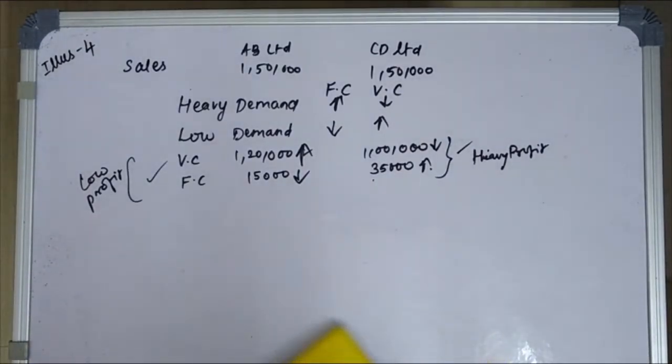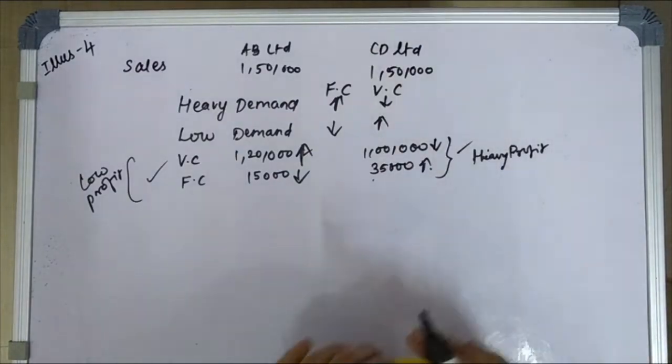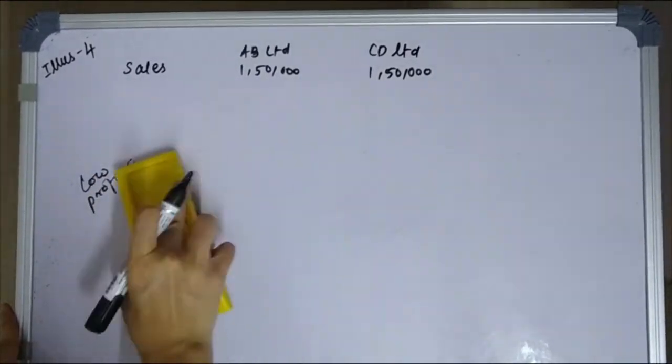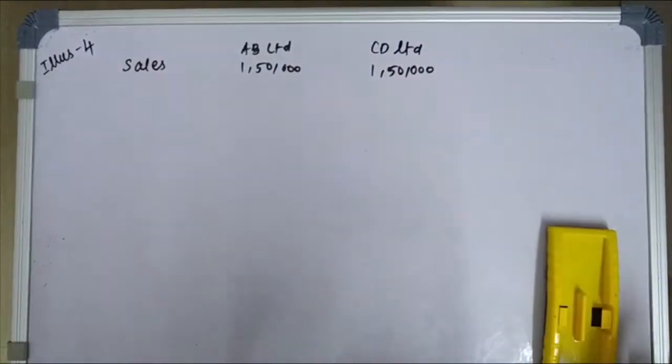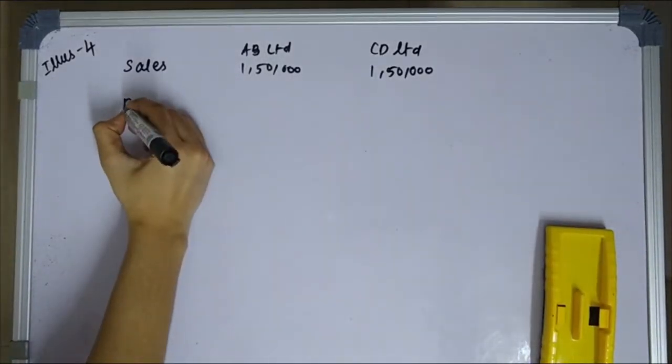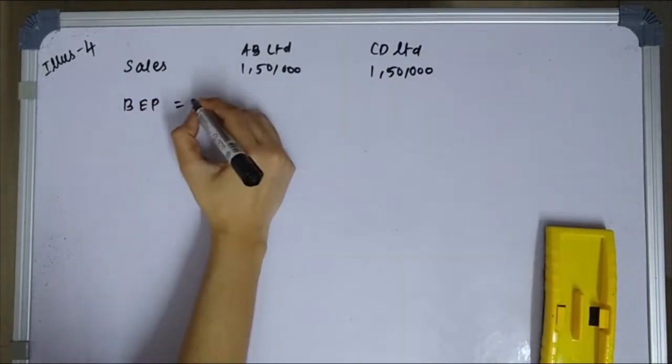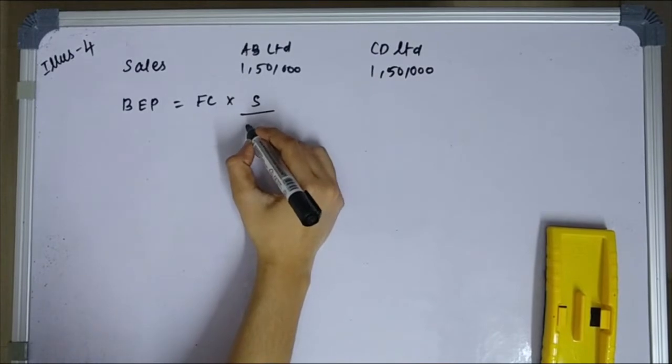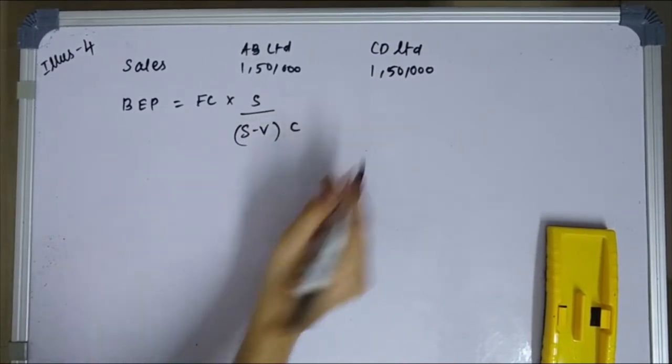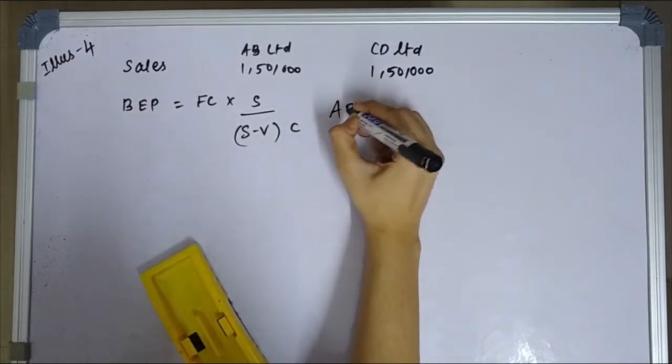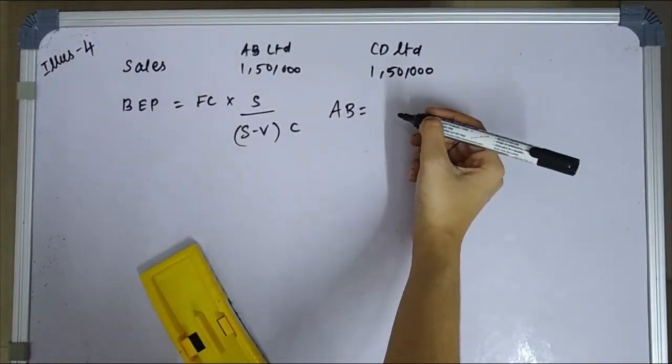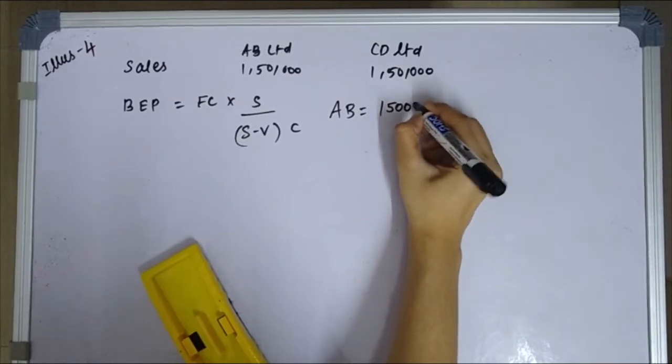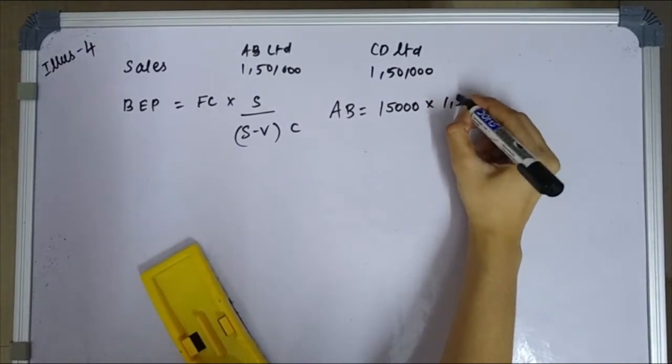So next BEP, what do you calculate with this sum? BEP formula: fixed cost into sales divided by contribution. Sales minus variable cost. First, AB limited. AB limited fixed cost $15,000, next sales $1,50,000.